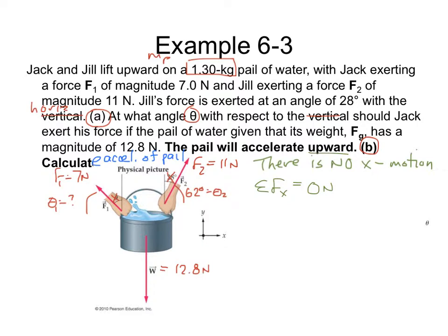There are going to be forces in the X direction because we have the 11-newton force and the 7-newton force both at angles from the horizontal. We'll call those Force 2 in the X direction and Force 1 in the X direction. So: Force 1 in the X direction plus Force 2 in the X direction equals zero newtons.